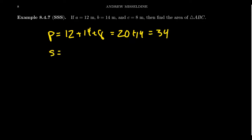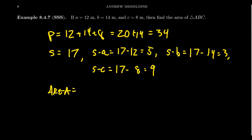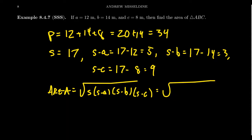First we compute the perimeter: 12 + 14 + 8 = 34. The semi-perimeter is half of that, so s = 17. Next, s minus a = 17 minus 12 = 5; s minus b = 17 minus 14 = 3; and s minus c = 17 minus 8 = 9.